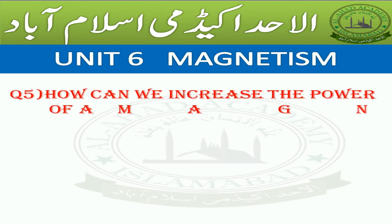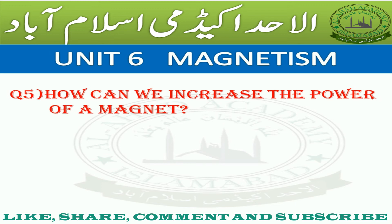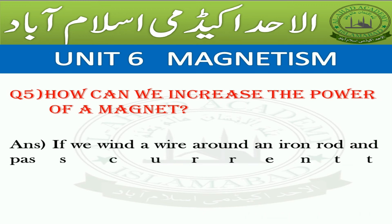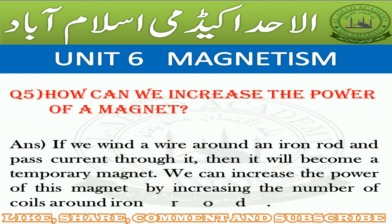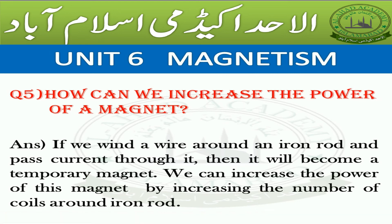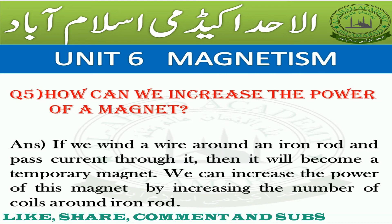Question Number 5: How can we increase the power of a magnet? Answer: If we wind a wire around an iron rod and pass current through it, it will become a temporary magnet. We can increase the power of this magnet by increasing the number of coils around the iron rod.